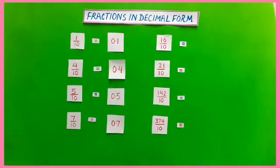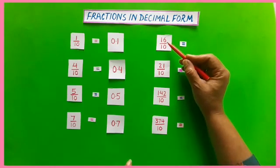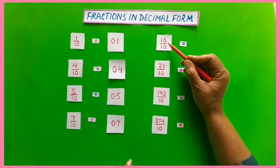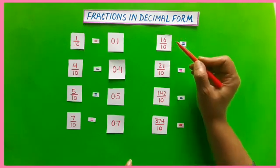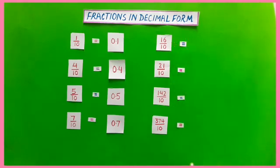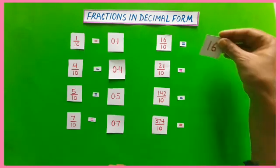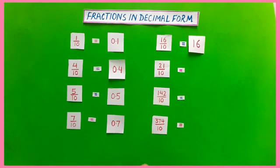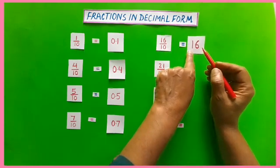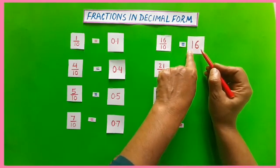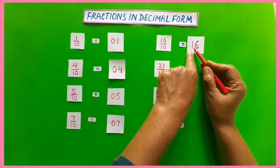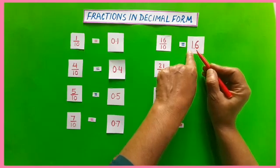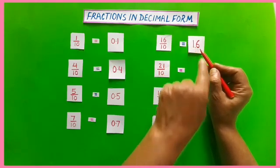Here is another example. It is 16 by 10. See that there are 2 digits in the numerator. So for writing the decimal form of this fraction, we will write the numerator as it is — it is 16. Now we will put a decimal from the right-hand side leaving 1 digit. So now it is 1.6.